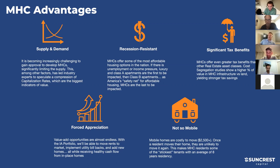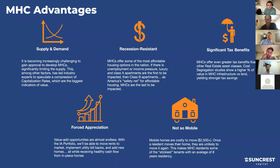Mobile home communities are recession resistant - they're essentially the bottom rung of housing, so there's compression of everyone moving down as home and rent prices go up. During COVID-19, mobile home community returns were the highest-performing asset in commercial real estate. Most operators were reporting about 95% rent collection versus 50 to 70% collection for retail and apartments during the height of the shutdowns.